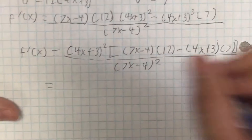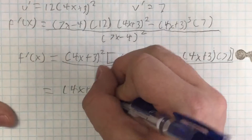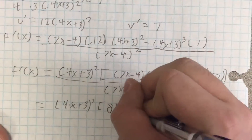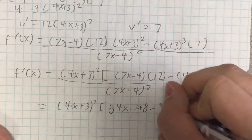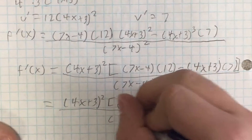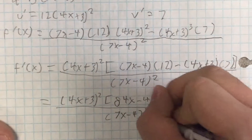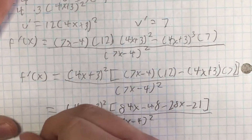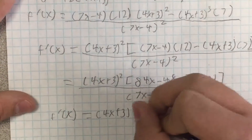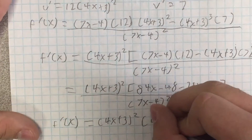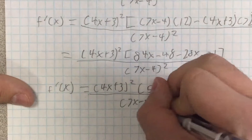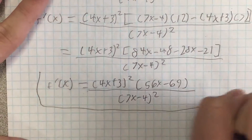And then we'll be able to multiply on the inside, so that's going to give us 4x plus 3 squared with 84x minus 48 minus 28x minus 21, all over 7x minus 4 squared. Then combining like terms, we get 4x plus 3 squared times 56x minus 69 over 7x minus 4 squared. And that is going to be the answer.